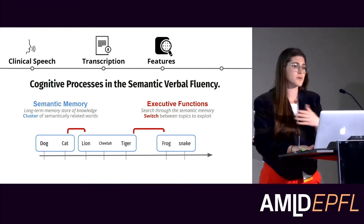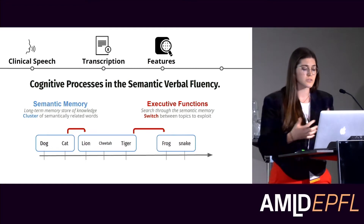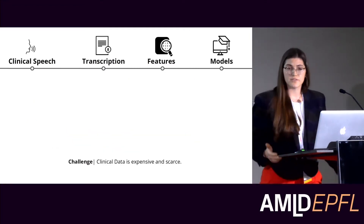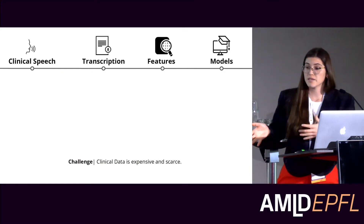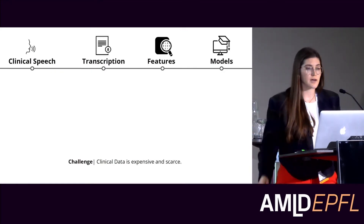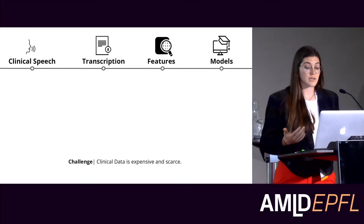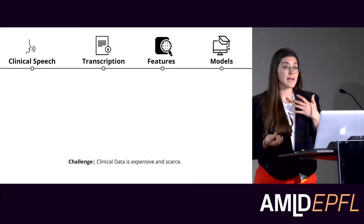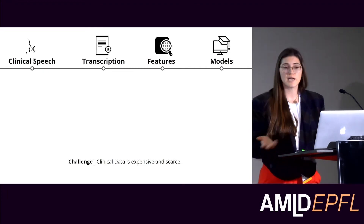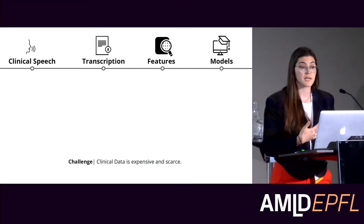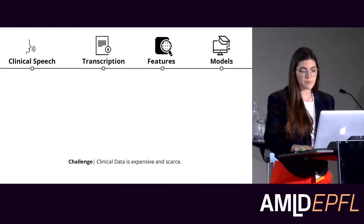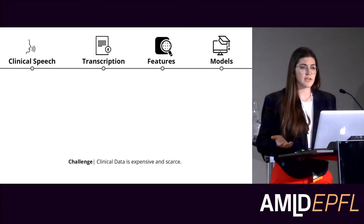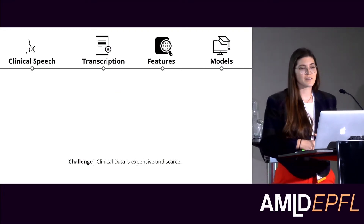From that we can compute lots of different features — how semantically related the words are, how long you spend in each cluster — just one example of the features that we would use. This gets fed into the downstream application where we say: do you have dementia or not, do you have some form of cognitive impairment or not? But clinical data is expensive and very hard to collect. We run into a lot of problems — we can't even share between sites, sometimes can't share between project partners.